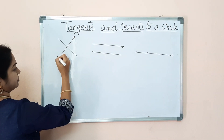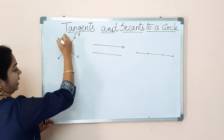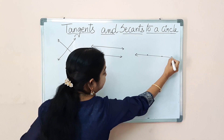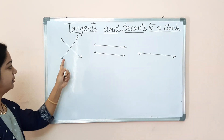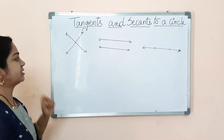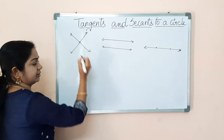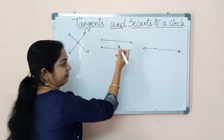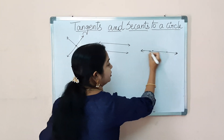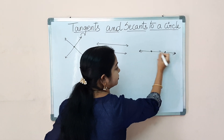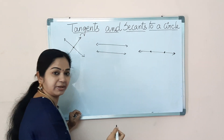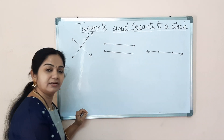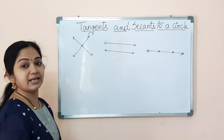I have drawn a few lines. You see these lines — they are intersecting; these two lines are intersecting at one point. Here there is no common point, so they are called parallel lines. Here both the lines are coinciding with one another, that means overlapping. So these three types of lines you have studied in your ninth class in the chapter on lines and angles.